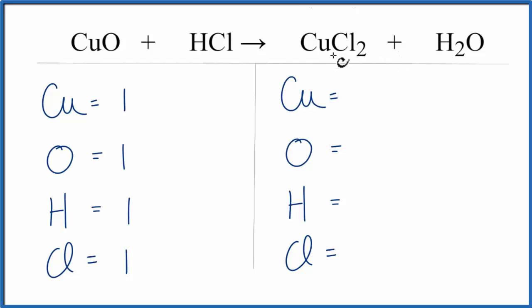On the product side, we have our copper 2 chloride in water. We have 1 copper, 1 oxygen, we have 2 hydrogens, and then we have 2 chlorines.